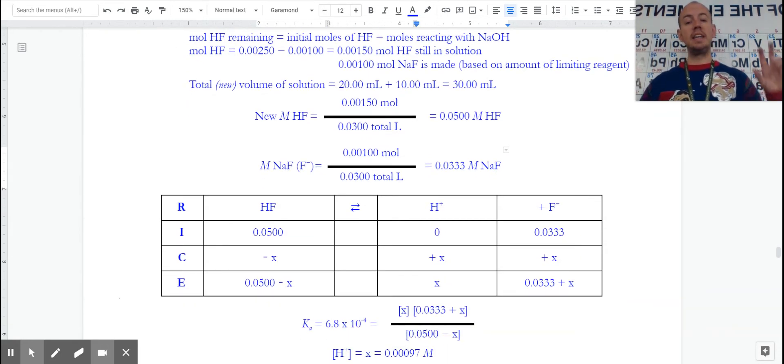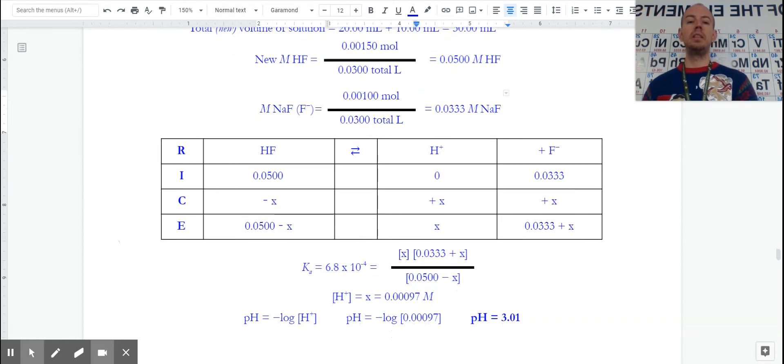So here, our initials are not how much we started with at the beginning, it is how much do we currently have in solution. So I've got a certain amount of acid, we don't know how much hydrogen ion has dissociated, but we do know we've made a certain amount of conjugate base, all of those in terms of molarity. This is still decreasing to make hydrogen ion. Well, that will increase the amount of fluoride a little bit. And when we look at this, because these values are close enough to our Ka value, we cannot ignore our minus and plus x's.